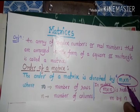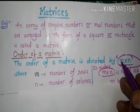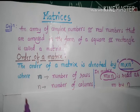In matrix notation, m by n means m into n. So m is the number of rows and n is the number of columns.